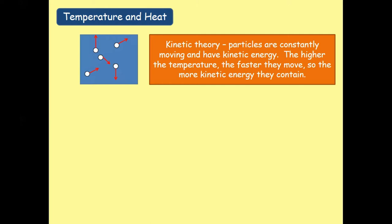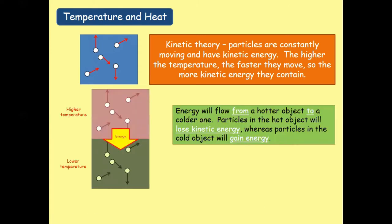These two concepts — heat and temperature — when applied in kinetic particle theory, which you have already learned in chemistry in previous grades in chapter one, states of matter, give us a point related to the motion of particles in solids, liquids and gases. Energy will flow from a hotter object to a colder one. Particles in the hot object will lose kinetic energy whereas particles in the cold object will gain energy. Kinetic energy is that energy which describes motion, and according to its formula it relates to the mass of the particles and the velocity of the particles.